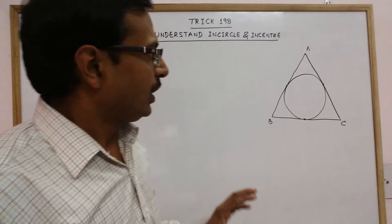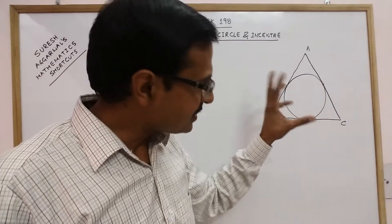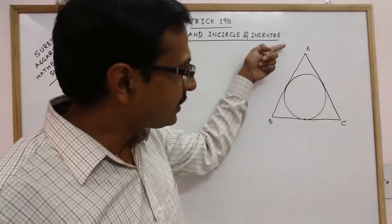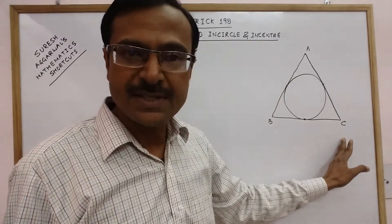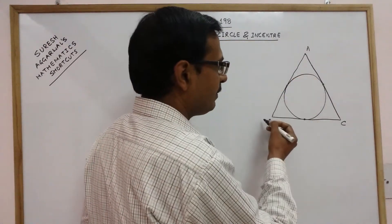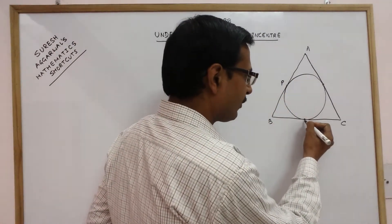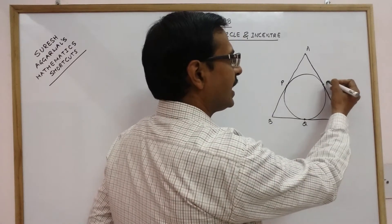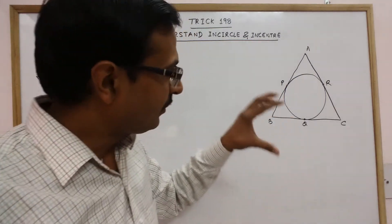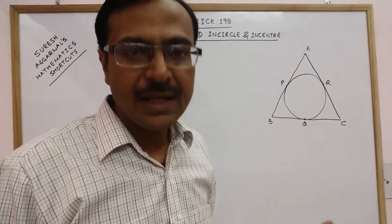In this figure you can see a triangle ABC and there is a circle which is touching all the three sides of triangle ABC at a unique point. The side AB has a point of contact P with the circle, side BC has a point of contact Q, and side AC has a point of contact R.